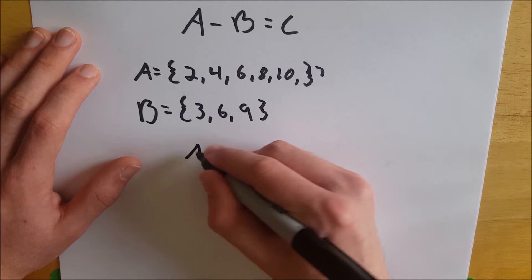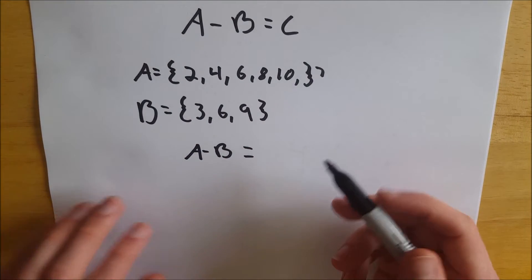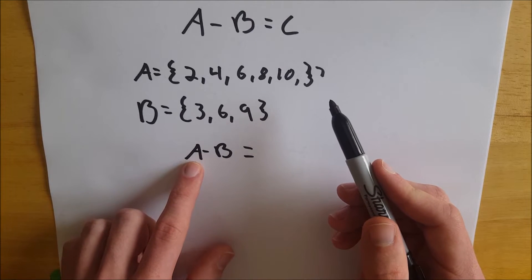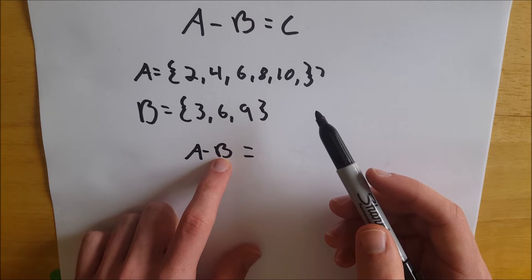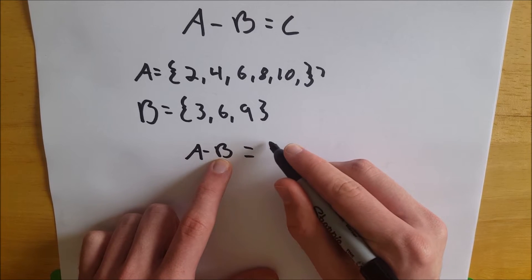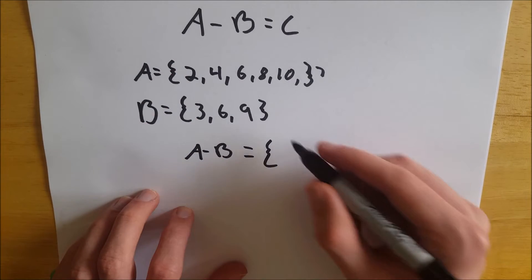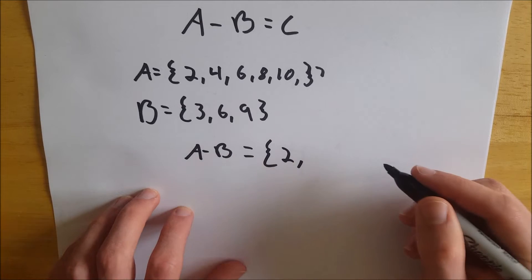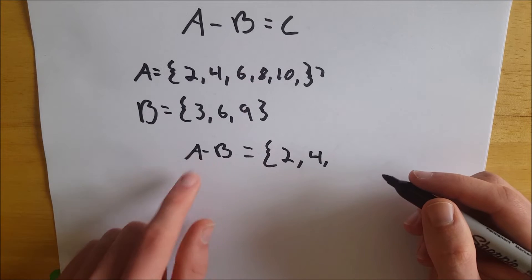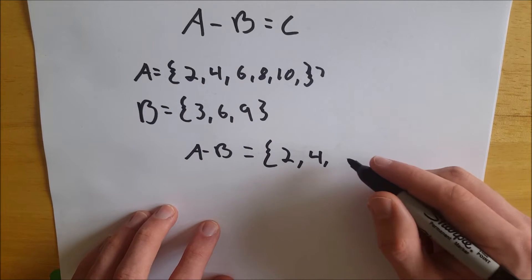So then what is A minus B? Well, when you do set subtraction, your set C is going to be all of the elements in your first set, A, except missing all of the elements that it has in common with B. So if we go to construct this set C, we get 2 because 2 is in A and it's not in B. We get 4 because 4 is in A and not in B. We don't get 6 because 6 is in B, so 6 is subtracted. So we don't get the 6.